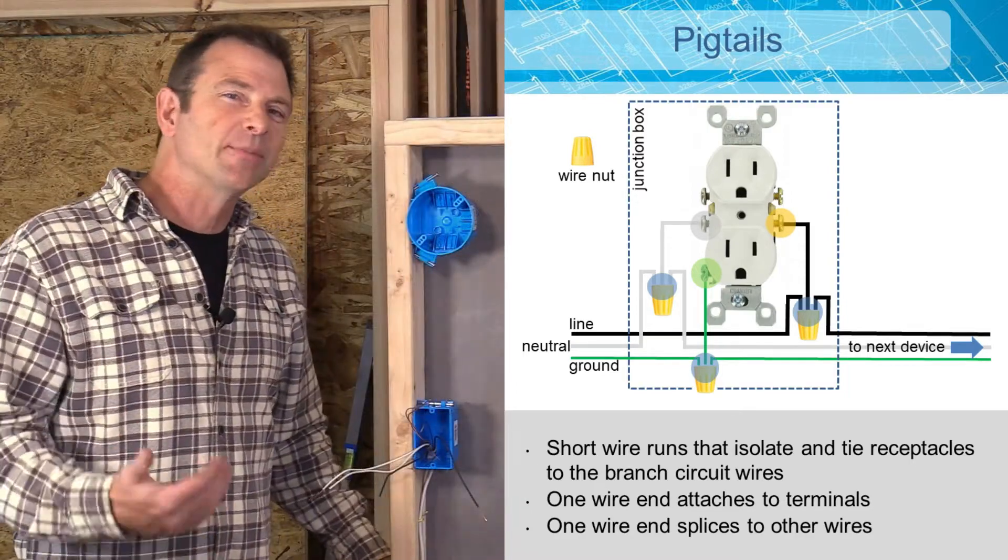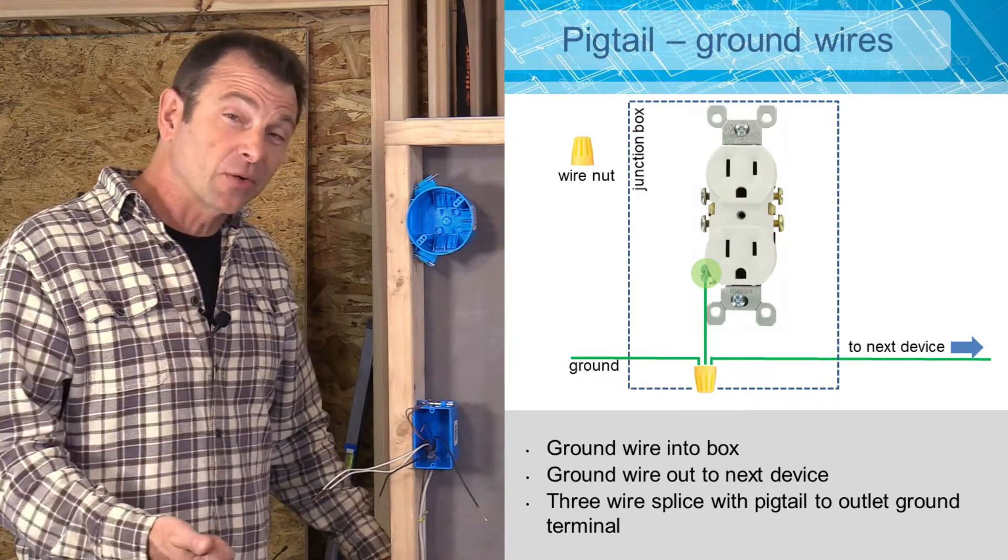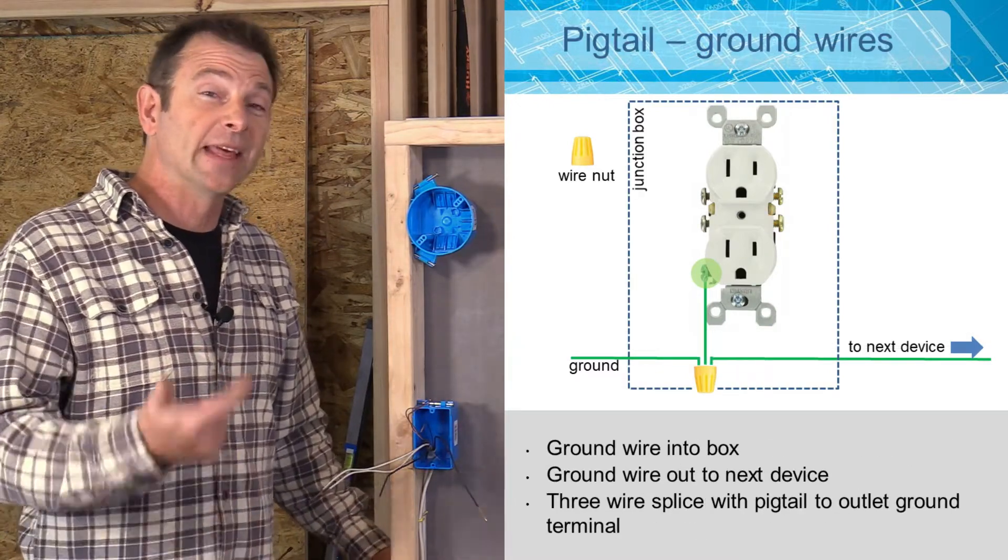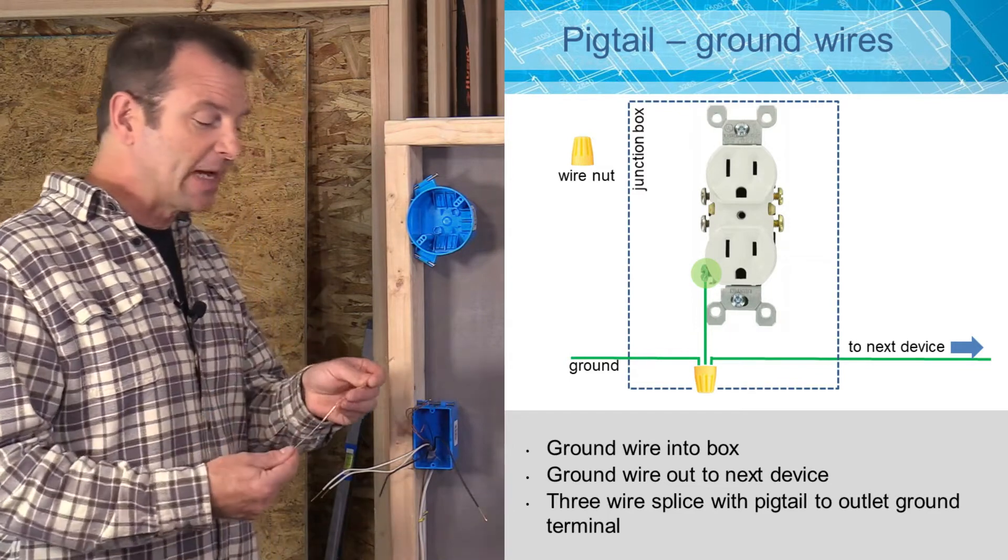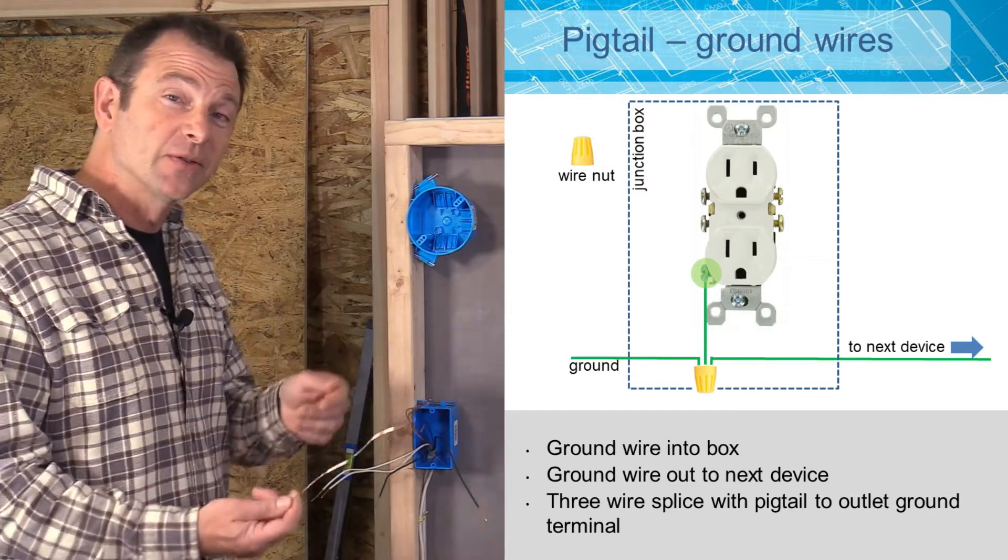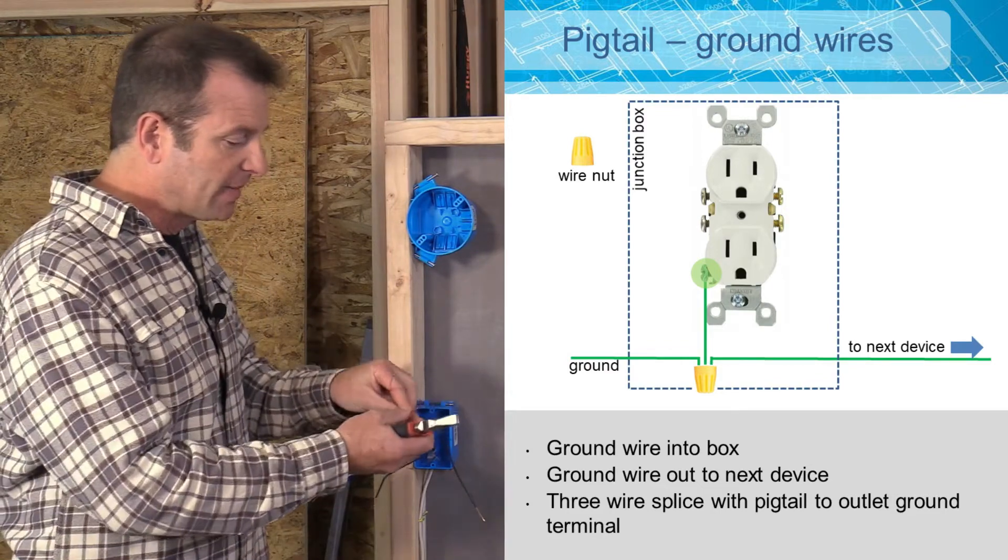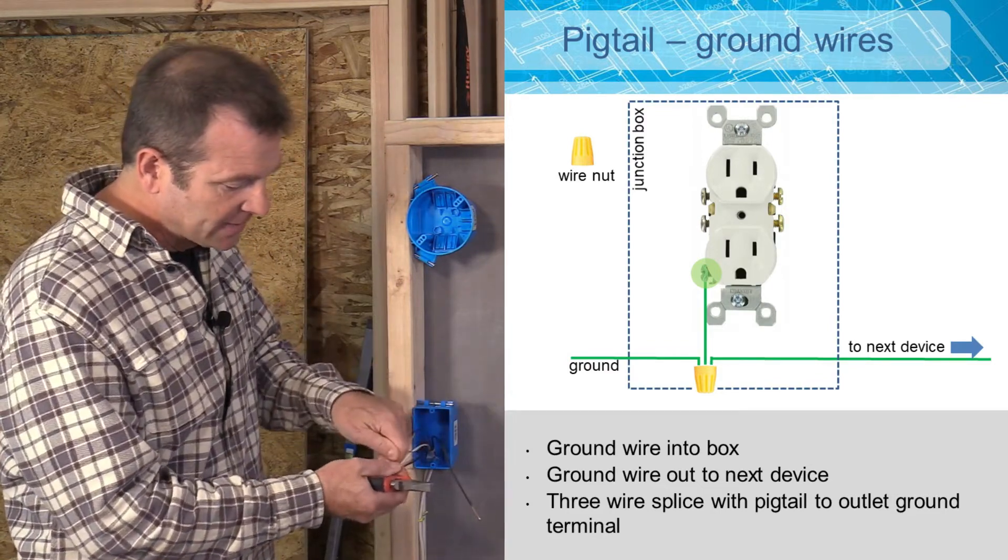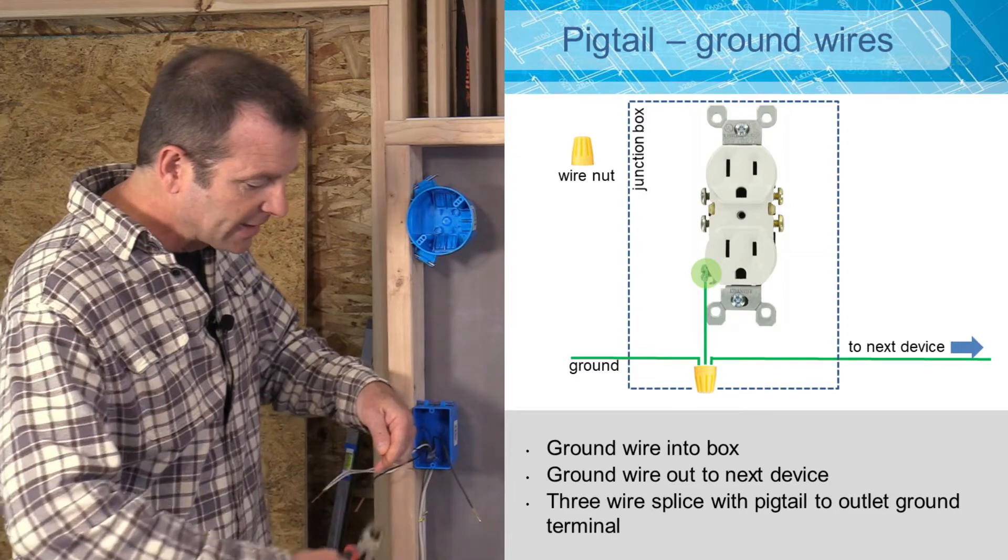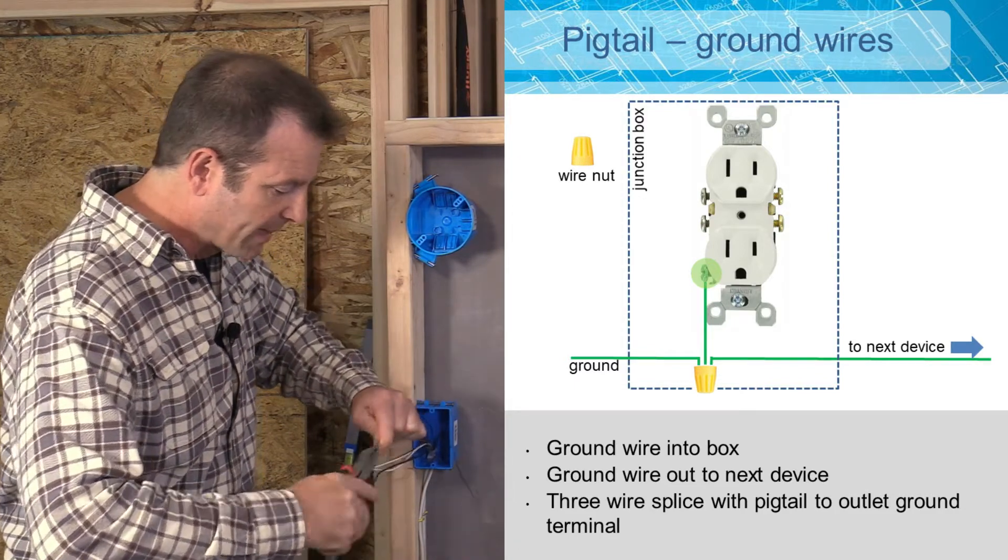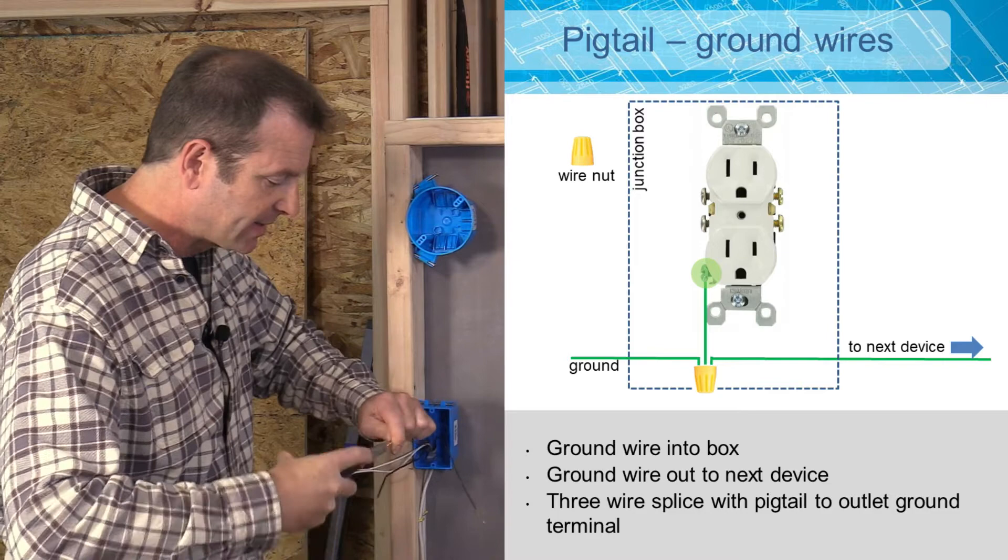We're always going to start in the process that we learned. First our ground, then our neutral, and then our black or our hot wire. So I have my short run here that I'm going to use for my pigtail for my ground. And I'm going to pull my two ground wires together. I've got all three together. Now I can twist them. And I'm going to make a nice solid connection here.